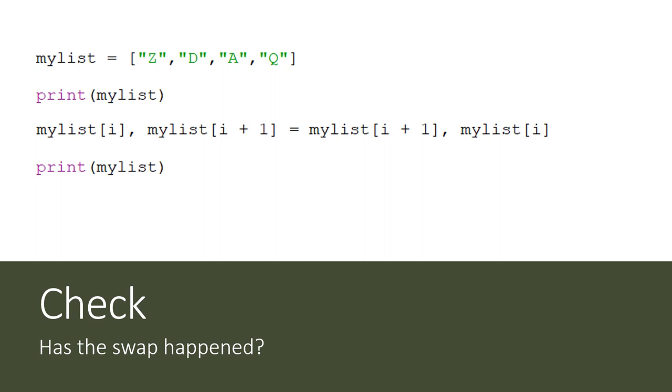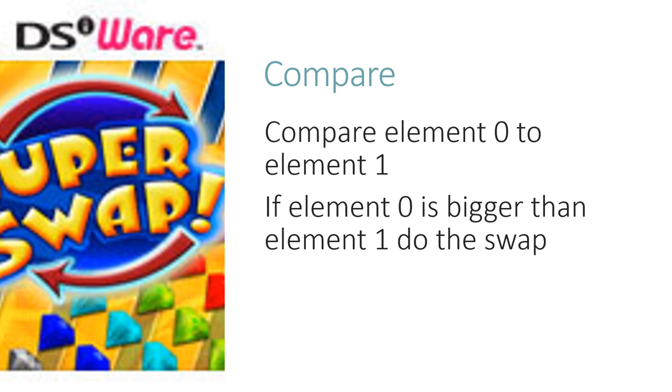OK, let's carry on with the bubble sort. The next thing we have to do is compare the two elements and only carry out the swap if the first element is bigger than the next element, because then they're the wrong way round.